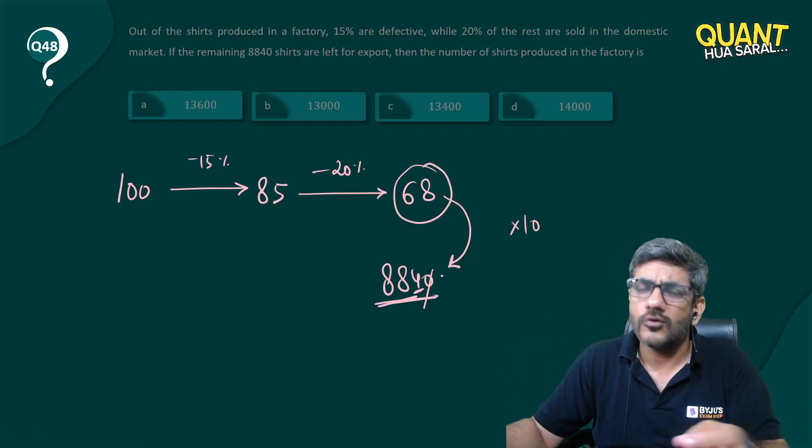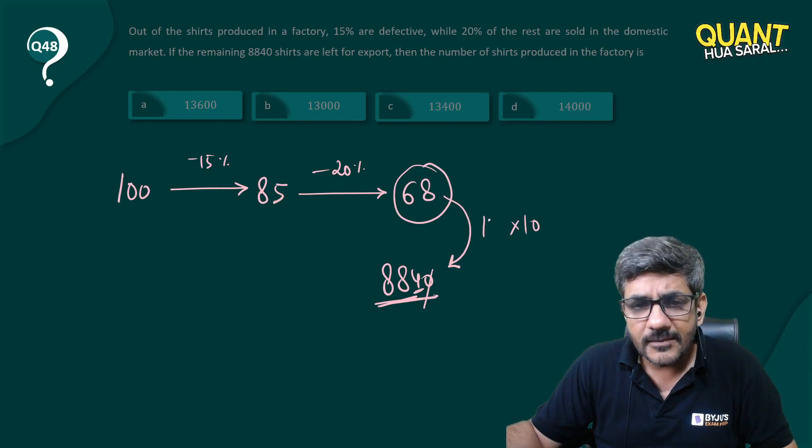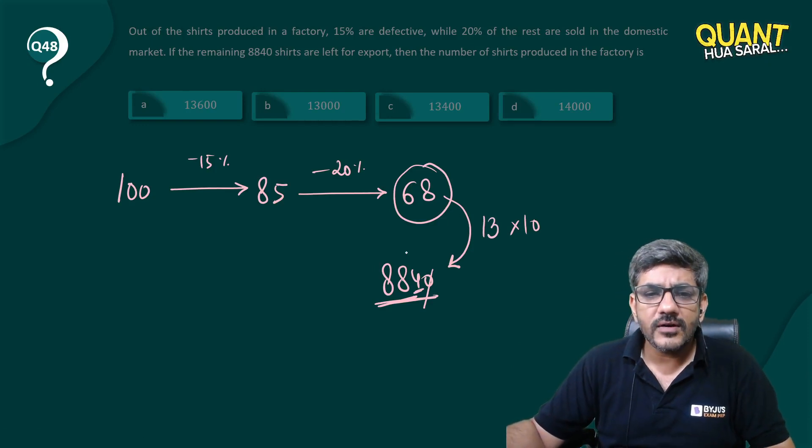It could have been 18 as well. Let's try with 13. 13 into 8 is 104 and then 10, 36 or 78 plus 10, 88. Yes, it satisfies.